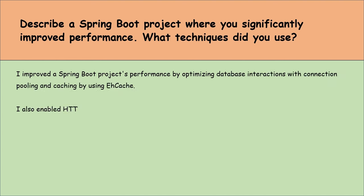How do you deploy a Spring Boot web application as a JAR and WAR file? To deploy Spring Boot web applications, we can package them as either JAR or WAR files. For a JAR file, we use Spring Boot's embedded server like Tomcat by running 'mvn package' and then the 'java -jar' command. If we need a WAR file for deployment on an external server, we change the packaging in pom.xml, ensure the application extends Spring Boot's SpringBootServletInitializer, and then build with 'mvn package'. The WAR file can then be deployed to any Java servlet container like Tomcat or Jetty.